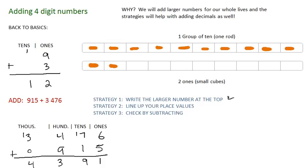So I wrote the larger number at the top. I lined up my place values. And now I'm just going to check by subtracting. So I'm going to check by taking this sum right here, four thousand, four thousand, four thousand three hundred and ninety-one. And I'm going to subtract this, one of my addends, nine hundred and fifteen, nine hundred and fifteen. Remember, there's no thousands.